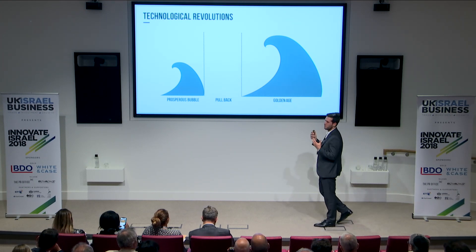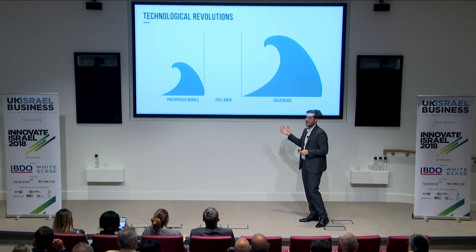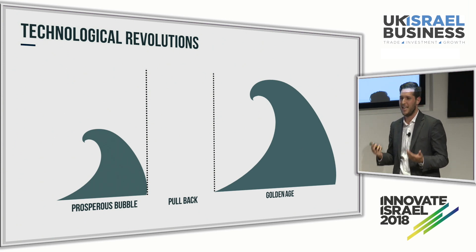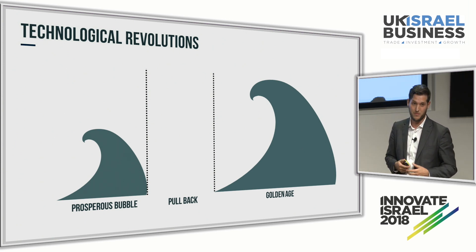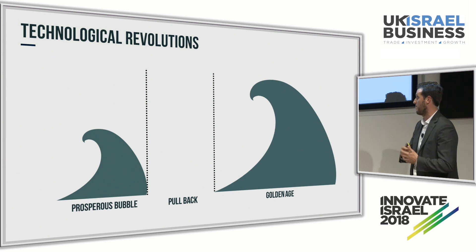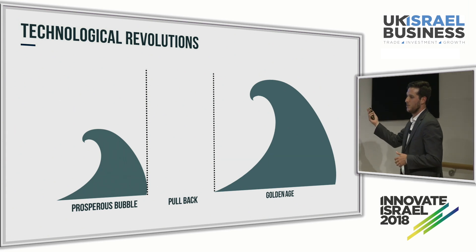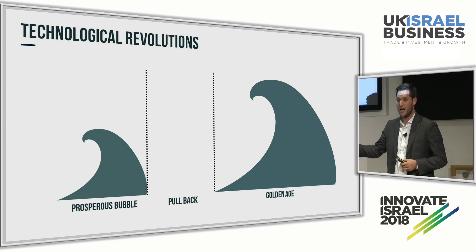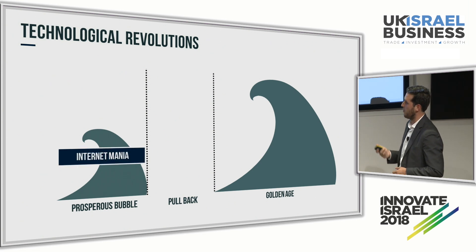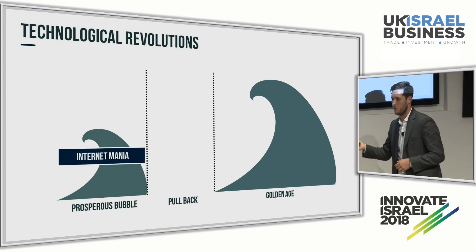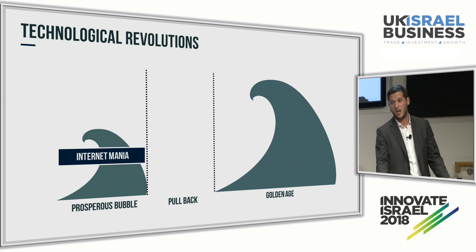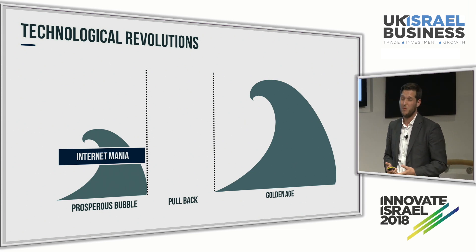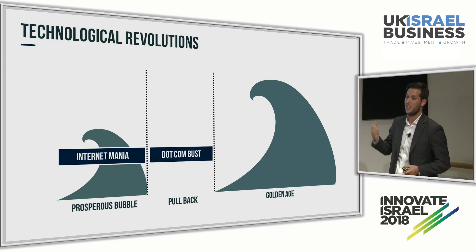Then comes a pullback phase, because we're seeing this prosperous bubble sort of burst, as the people who put in all the capital understand that the technology is not yet evolved enough for mass usage. Then we enter a golden age, where usually in the pullback phase the technology catches up to all the hype. We've seen this now in the IT revolution — we started in the 1990s with the internet mania, saw a lot of capital go to the internet, which was very promising but not very evolved, and that led to the dot-com bust.